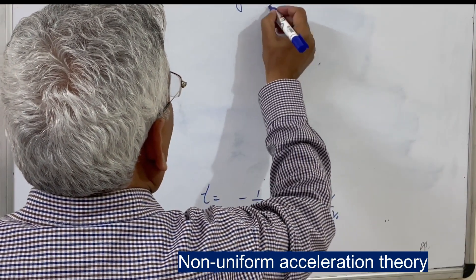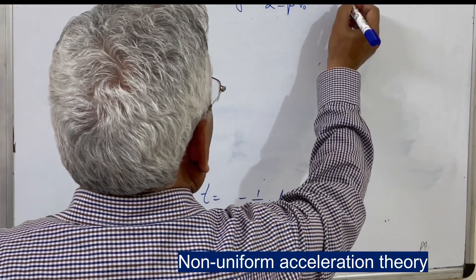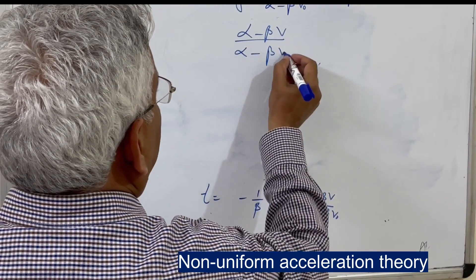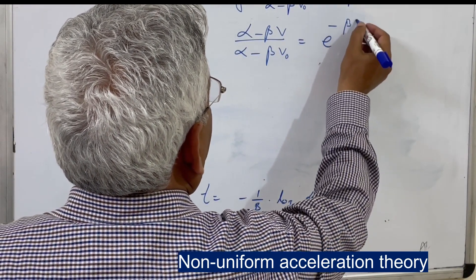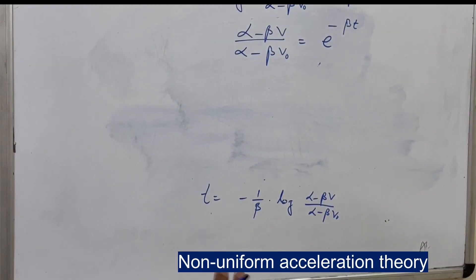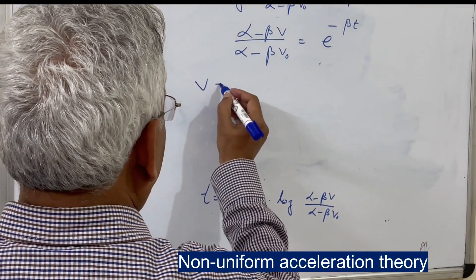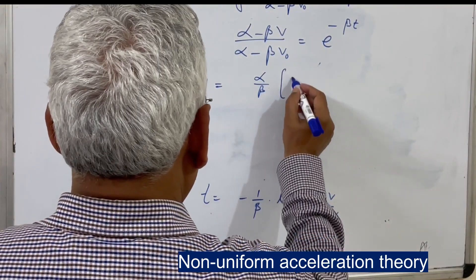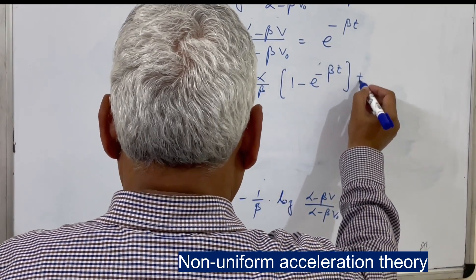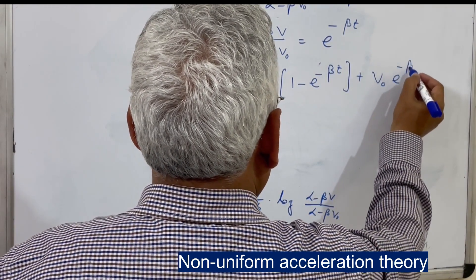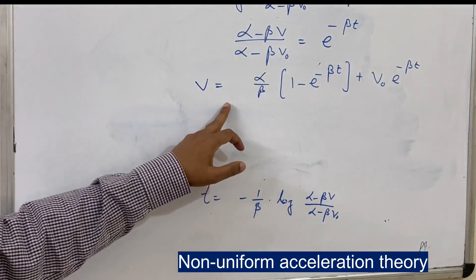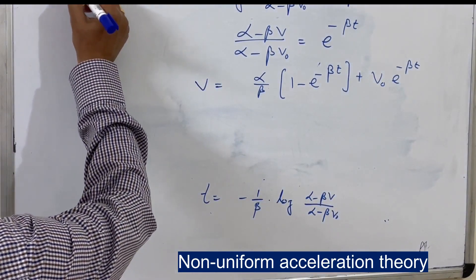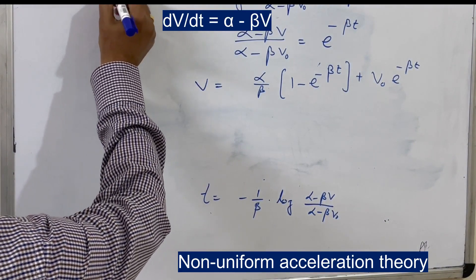Solving this equation, speed after time t is: v = (α/β)(1 - e^(-βt)) + v₀ × e^(-βt). This is the equation to find the speed of the vehicle at time t, given that the rate of acceleration is dv/dt = α - βv.